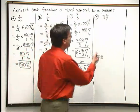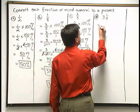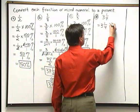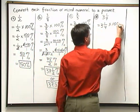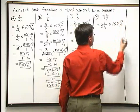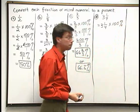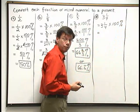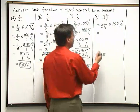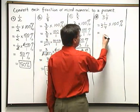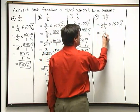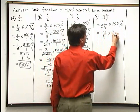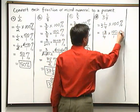And finally, we have one more problem here. We're going to take 3 and 1 fourth, a mixed numeral, and convert to percent form. In the same way, I'm multiplying by 100 percent. In order to multiply here, we need to convert 3 and 1 fourth to an improper fraction. 4 times 3 is 12 plus 1 is 13. That's 13 fourths times 100 over 1 percent.